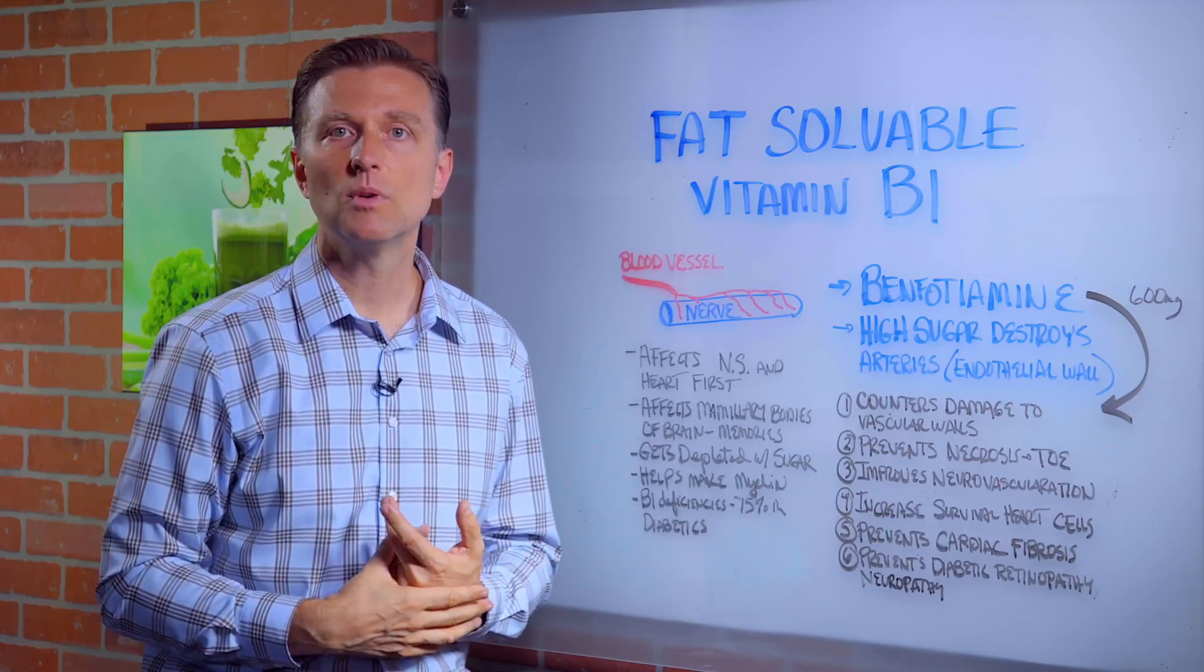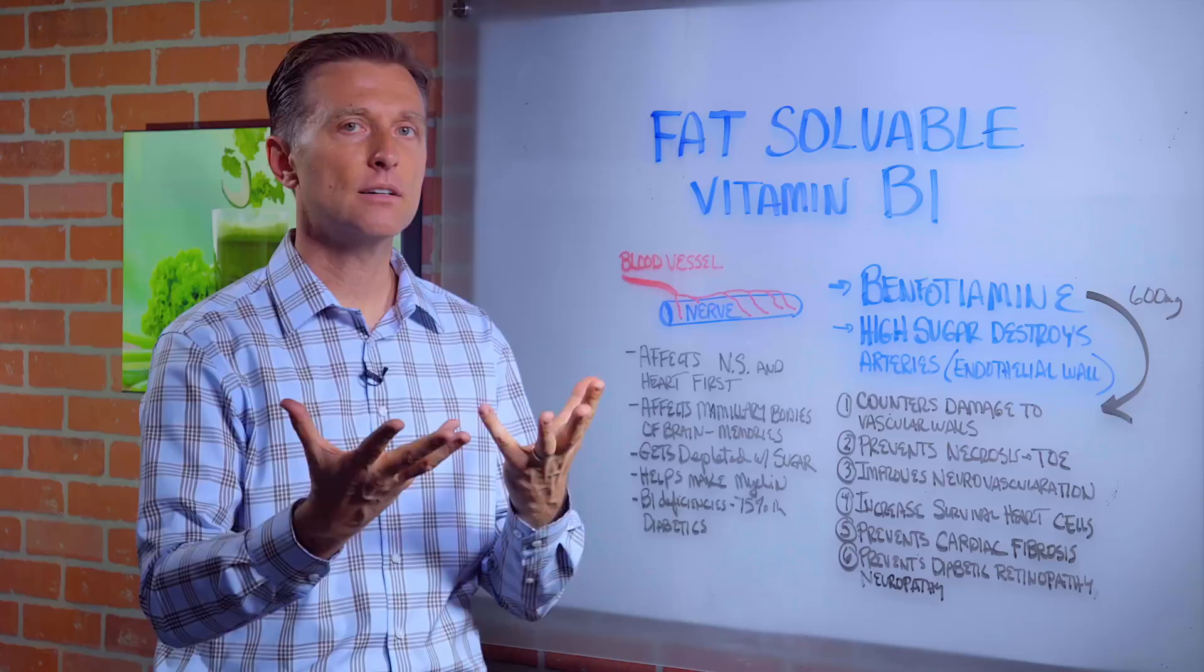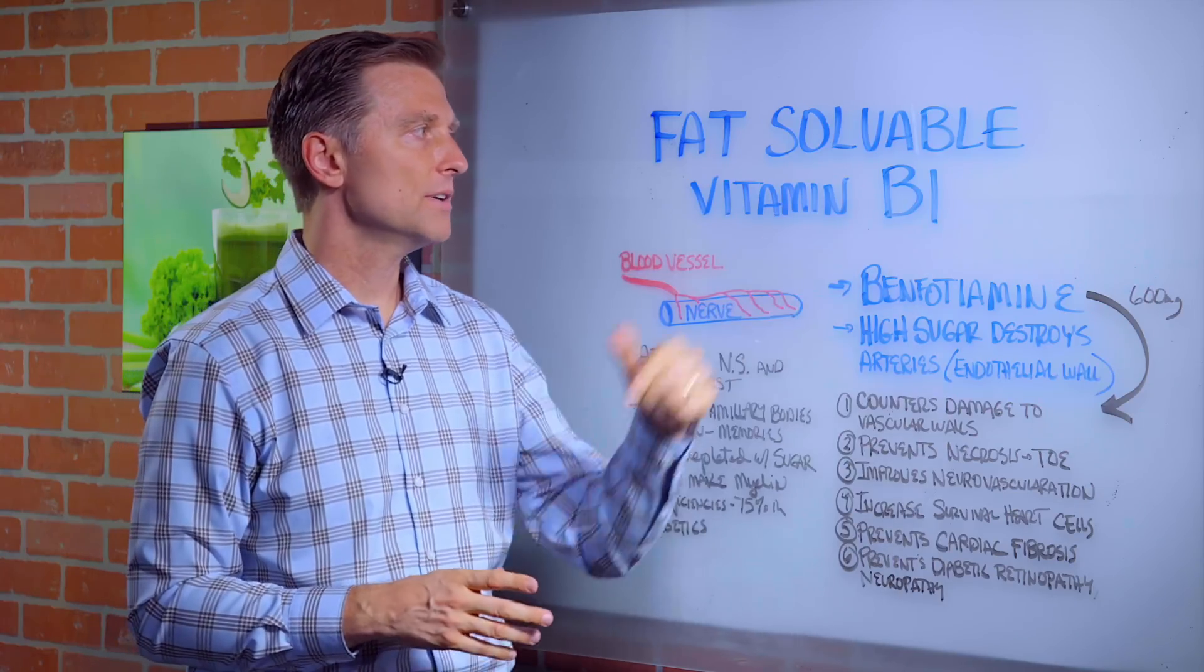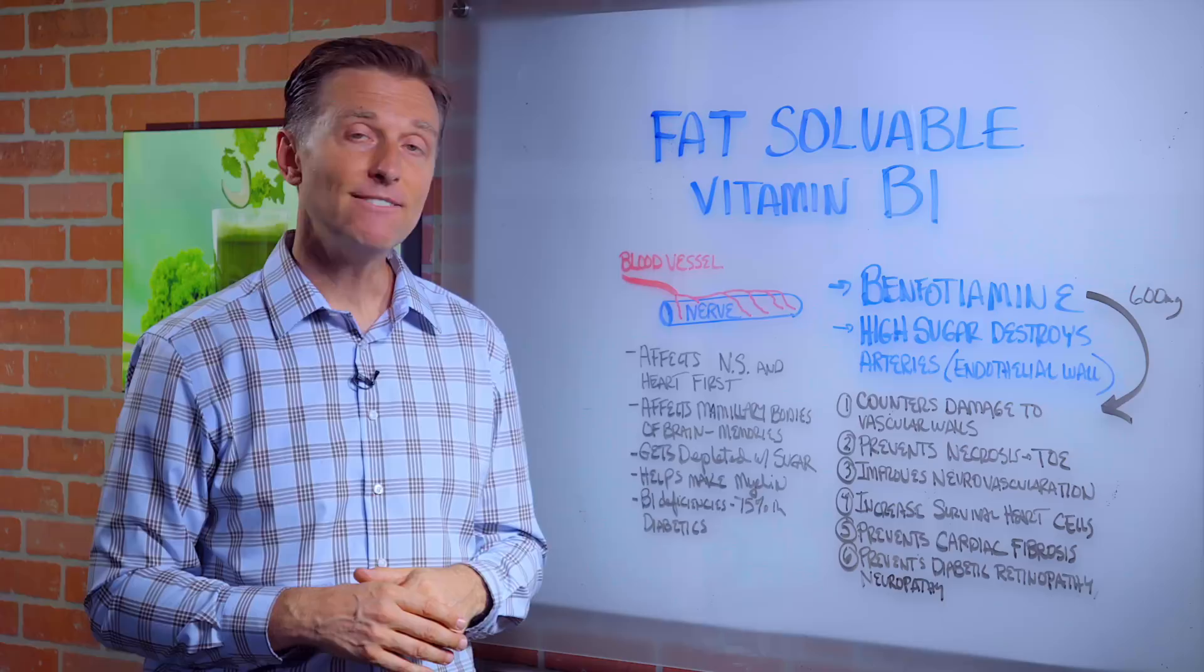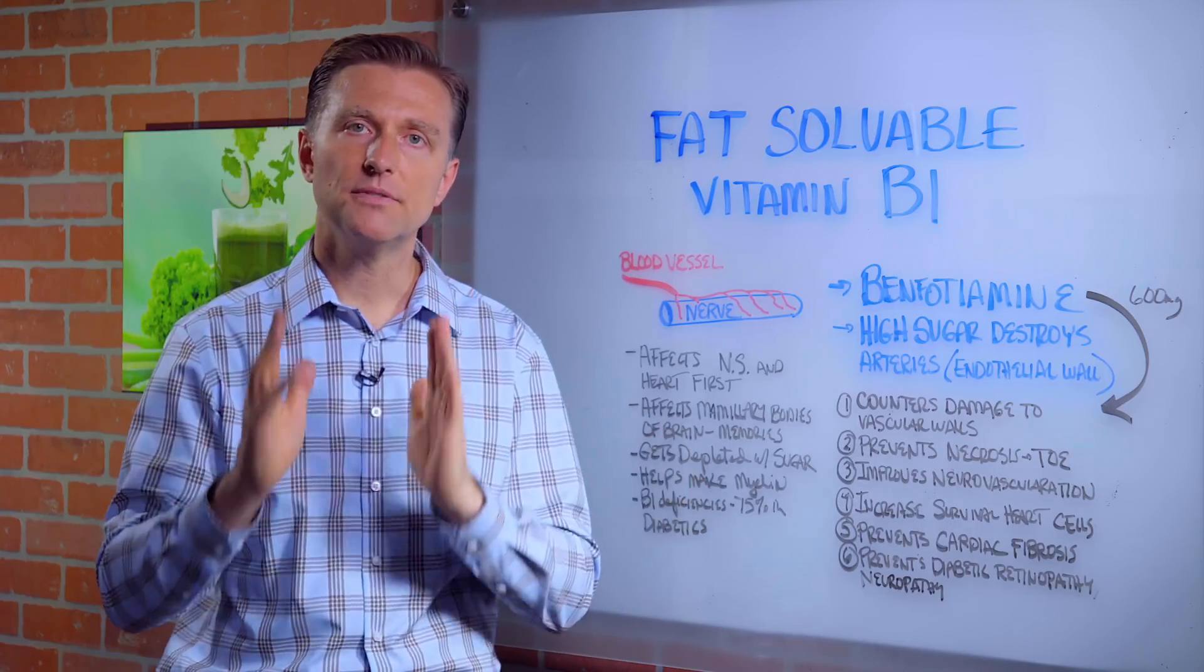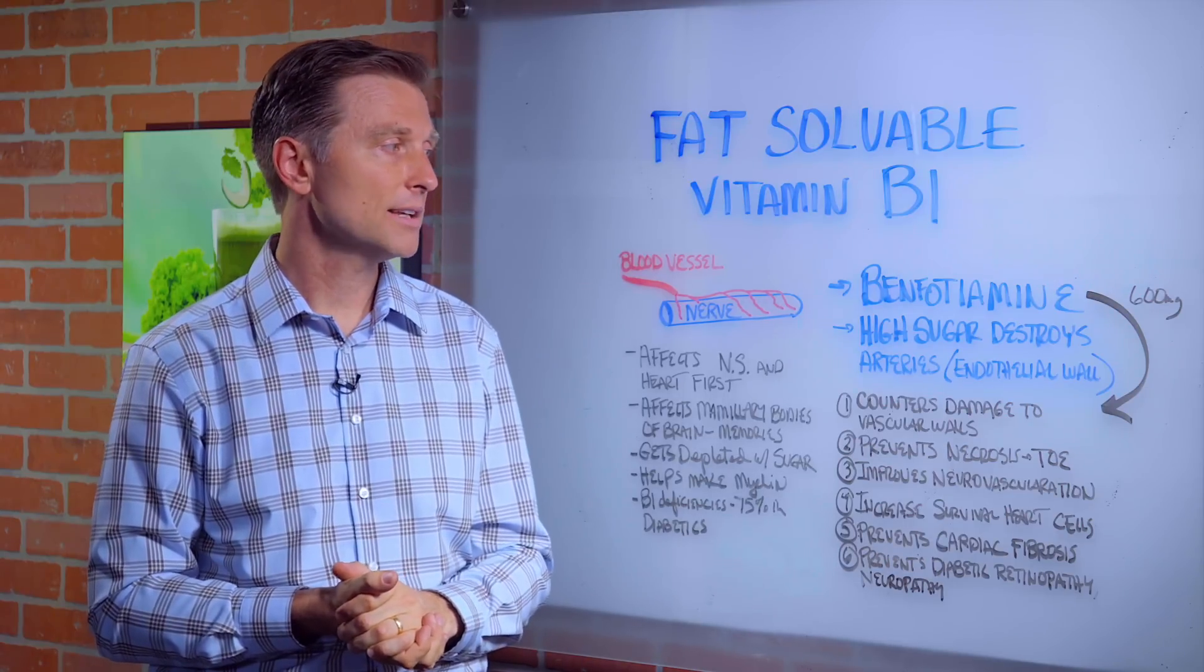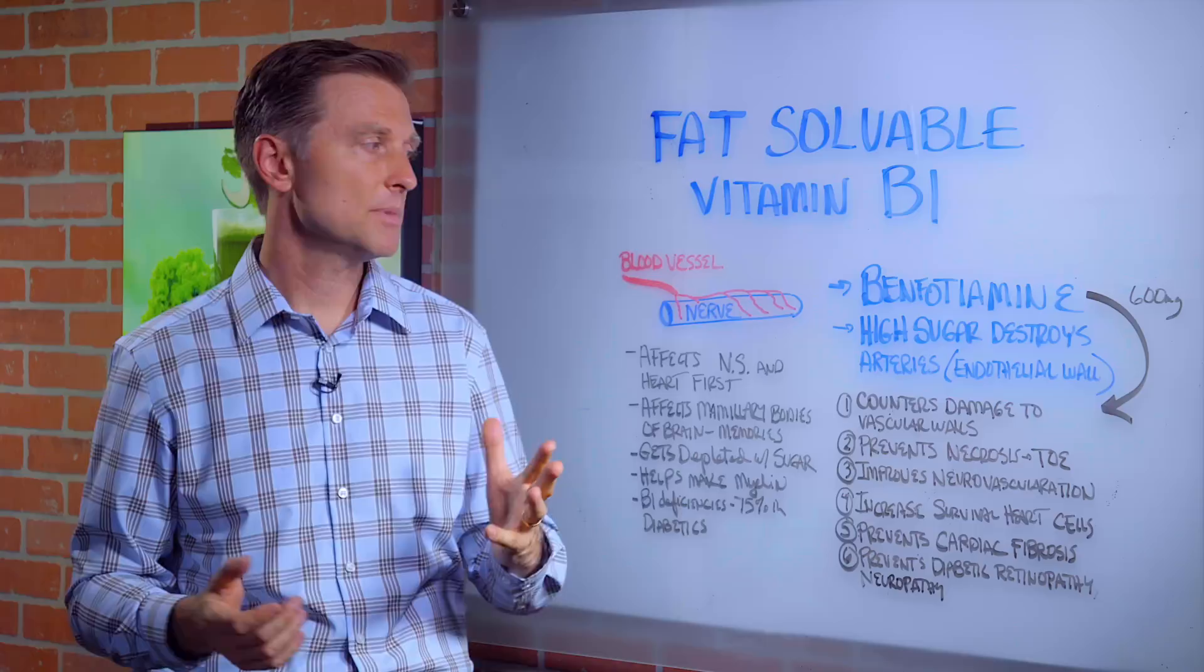When you consume a lot of sugar, or you're a diabetic and you have high sugar, you get a severe B1 deficiency. 75% of diabetics type 1 and 2 are deficient in B vitamins, primarily the B1, but other B vitamins as well.